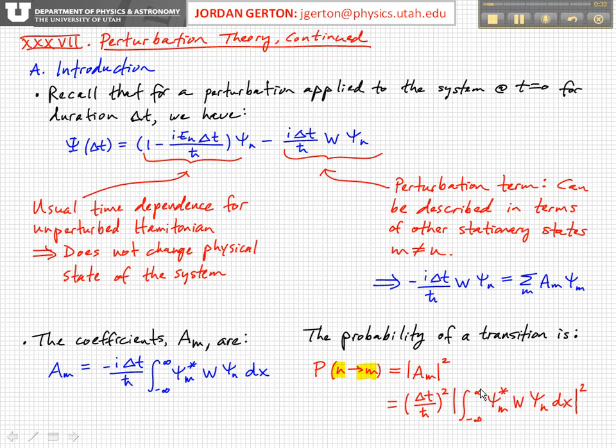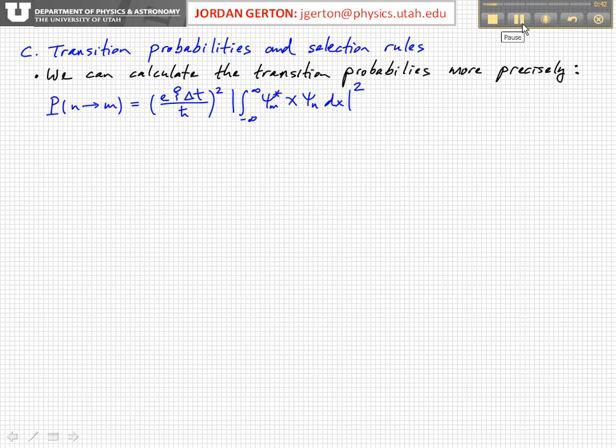So if we apply this to the current situation where we have an electric field with magnitude psi, then we get the following. We have the elementary charge times the magnitude of the electric field psi times delta t over h-bar squared times the square of the integral psi m-star. Again, m is the final state. We square that, and that will give us our transition probability.